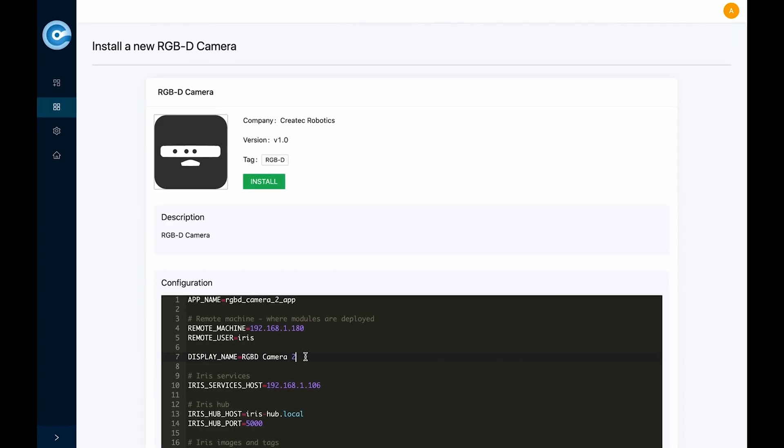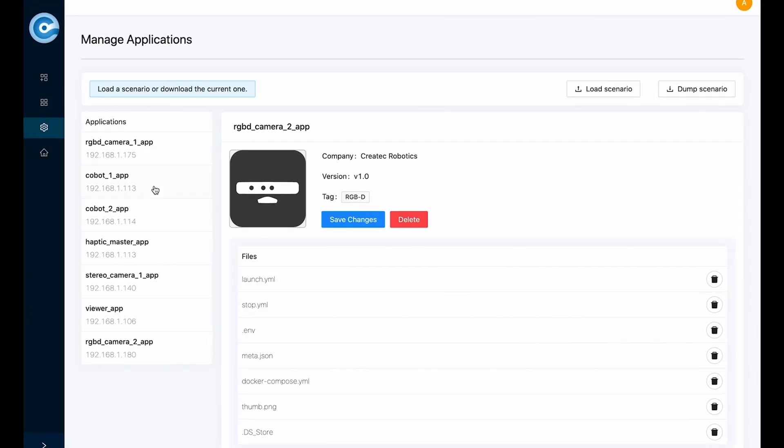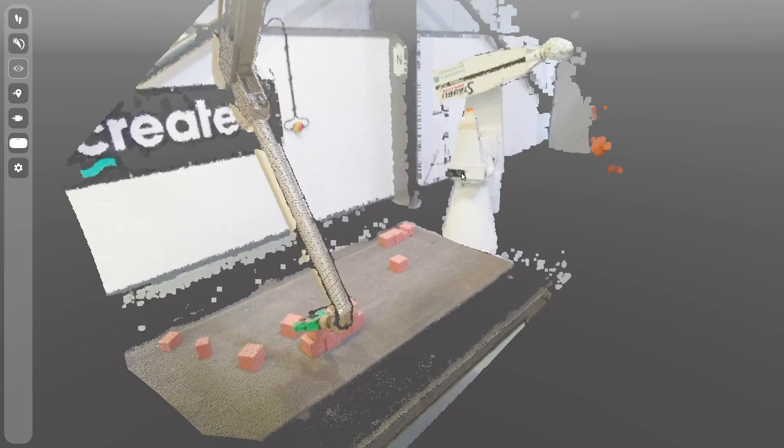Iris is a perfect solution for a system like this because of the modularity aspect. We can quickly interchange robots and sensors, add new sensors into the system so that we can scale the system to any of the end user requirements.